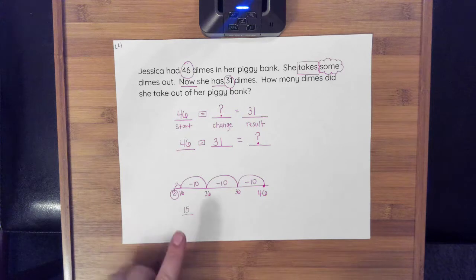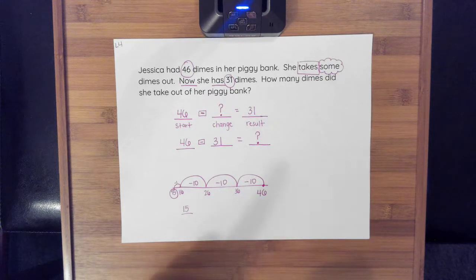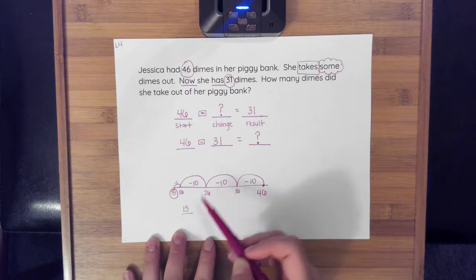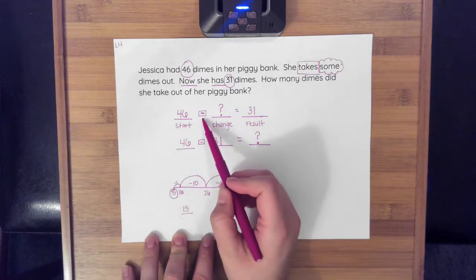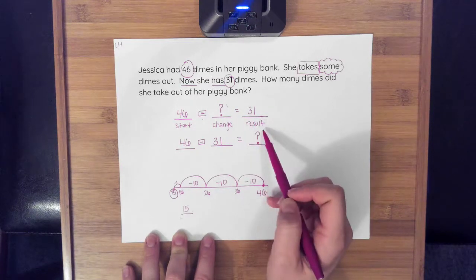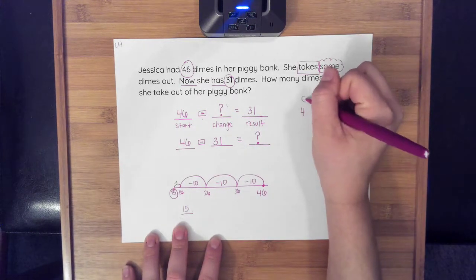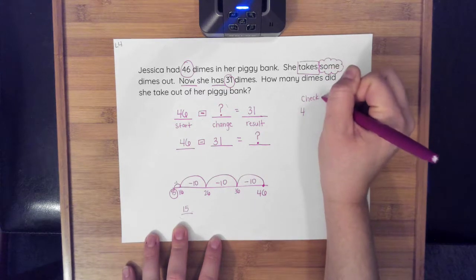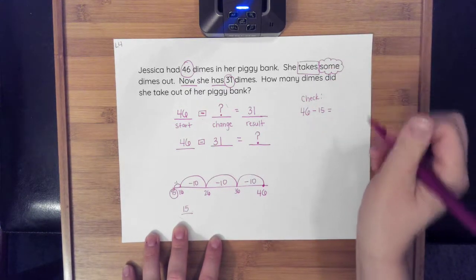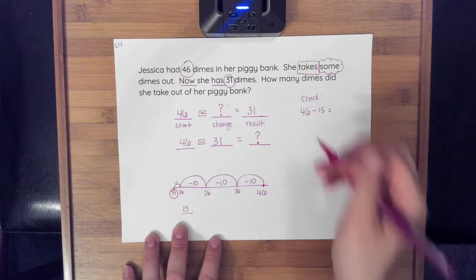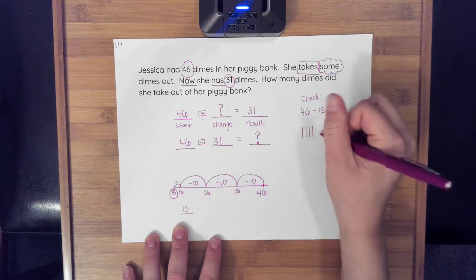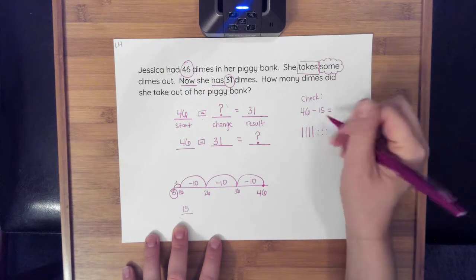So I would say, I'm going to go back and check this. I got 15 and I'm going to check it and see if 46 minus 15 that I now know is going to get me 31. So I want to check that 46 minus 15 does equal 31. So I know that if I have 46, I have 46.